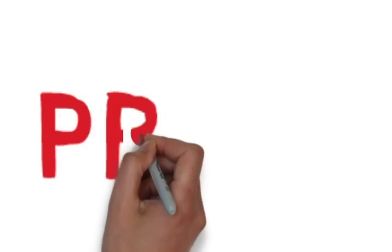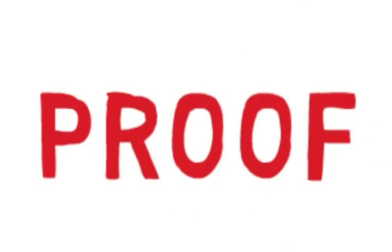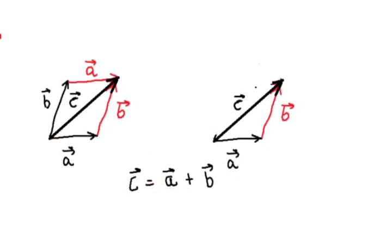Now let us look at the proof of the parallelogram law. It can very easily be proved from the triangle law. A diagonal divides a parallelogram in two equal triangles.